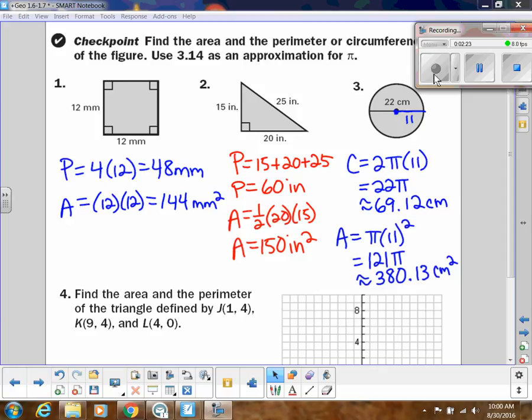So here are the answers, and I wanted to talk about a few things. Make sure you are using your units. So for perimeter, in the first one, you're using millimeters, but area would be millimeters squared. Also in number two, the triangle, make sure you're using 20 and 15 as the height and the base.